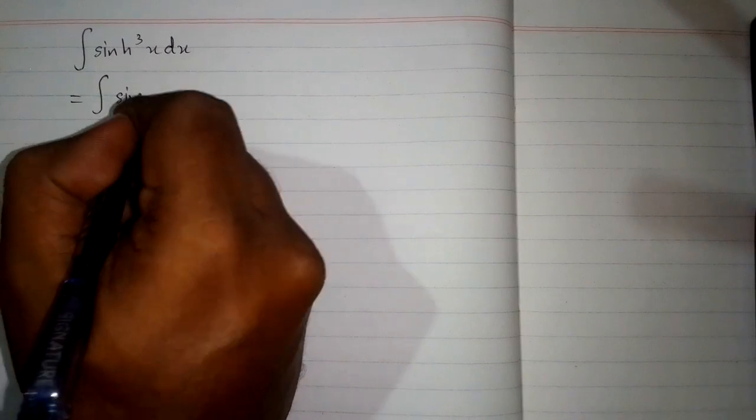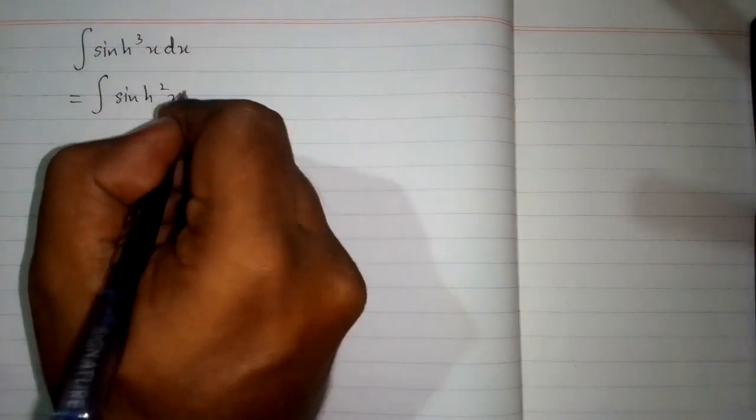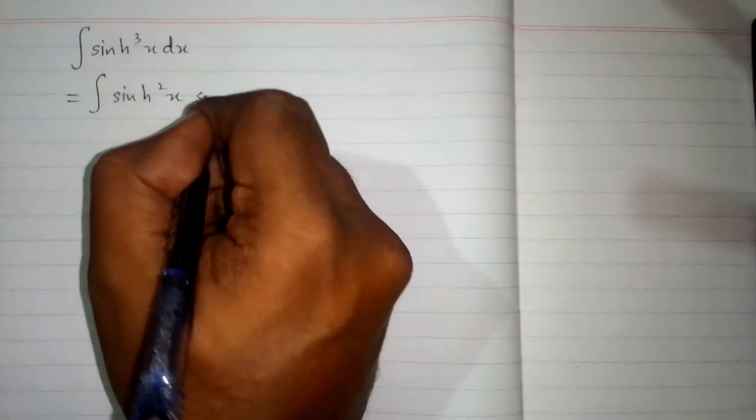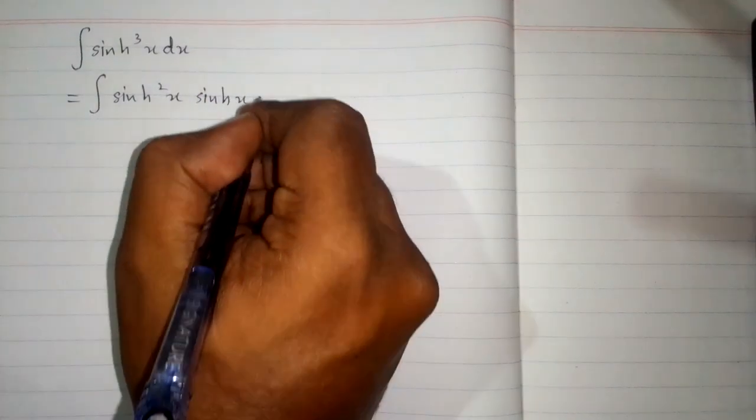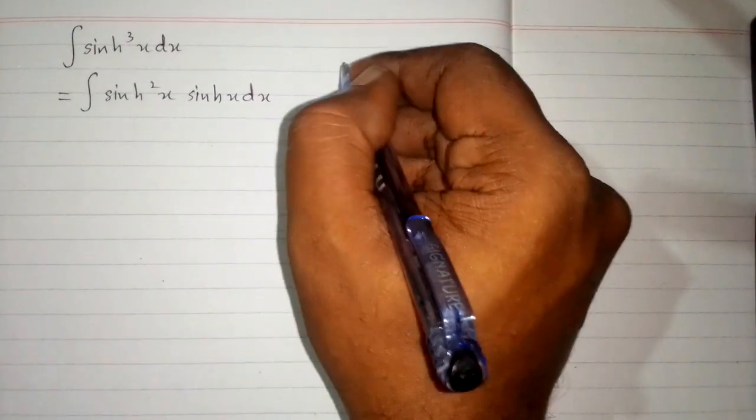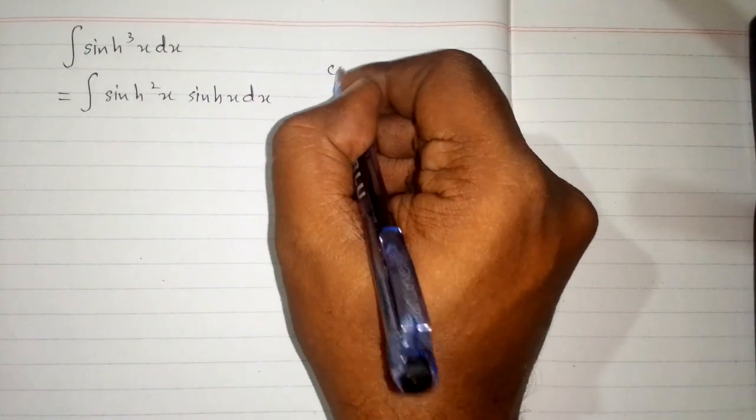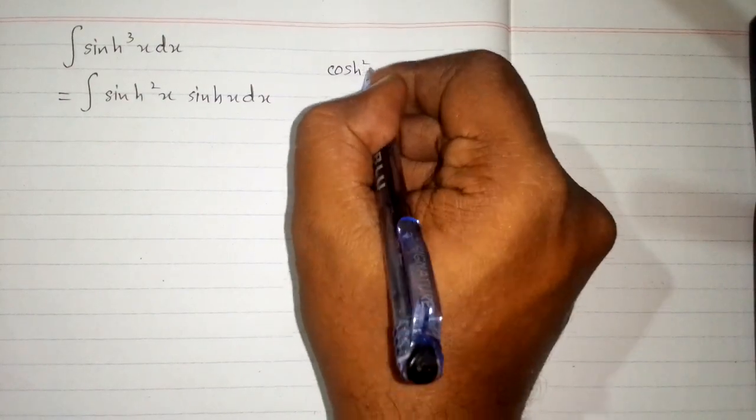In this video we will find the integral of hyperbolic sine cube of x. So first of all this can be written as hyperbolic sine square x multiplied by hyperbolic sine x dx. Now we know that hyperbolic cos square...